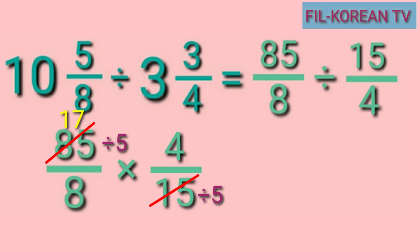Next, get the GCF of 8 and 4. The GCF of 8 and 4 is 4. So let's divide them by 4 and cancel. 8 divided by 4 equals 2, and 4 divided by 4 equals 1.